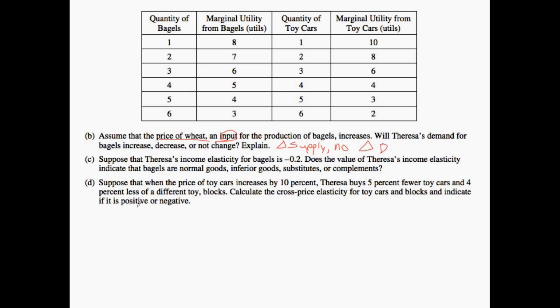Moving on to part C, we know that the income elasticity for bagels is negative 0.2. Does the value of Teresa's income elasticity indicate that they're normal, inferior, substitutes or complements? In this case we need to think about what income elasticity means, that is a percent change in demand versus a percent change in income. We have a negative income elasticity and therefore if I were to experience an increase in income I would experience a decrease in demand. If we think about this, as we become wealthier and experience higher levels of income we are experiencing a downward shift in the demand for bagels, therefore we're faced with an inferior good.